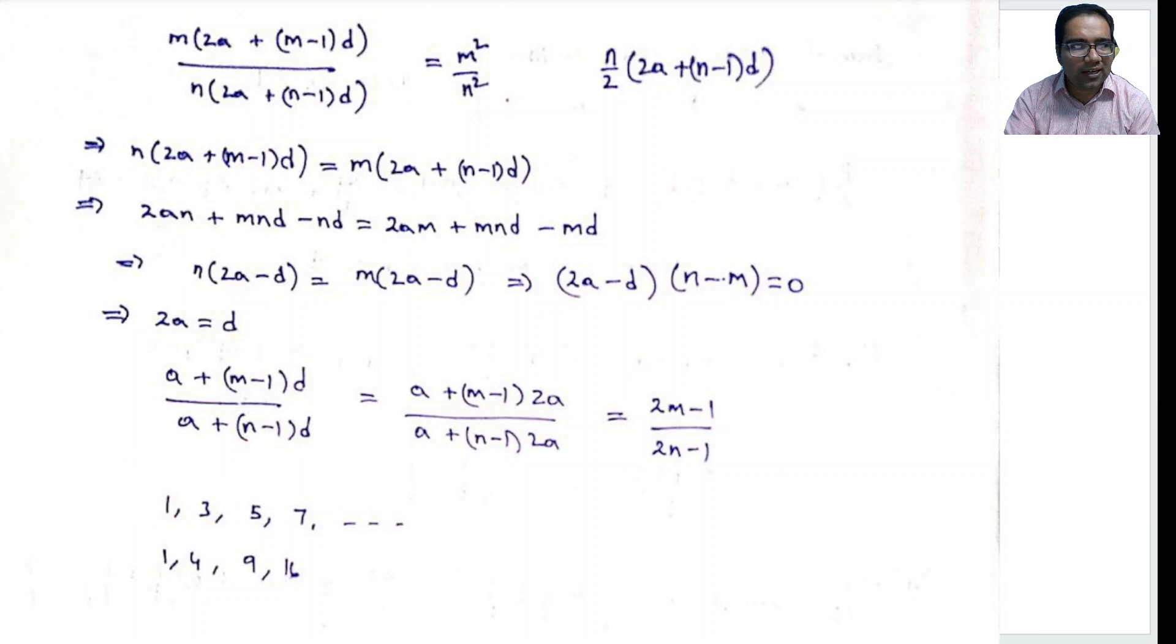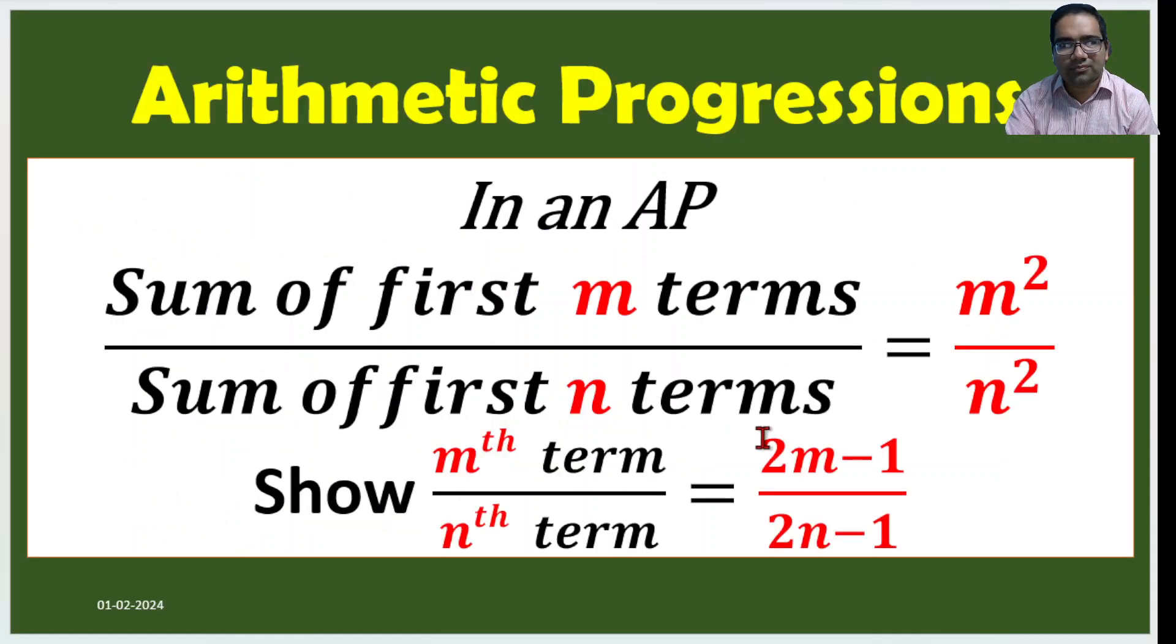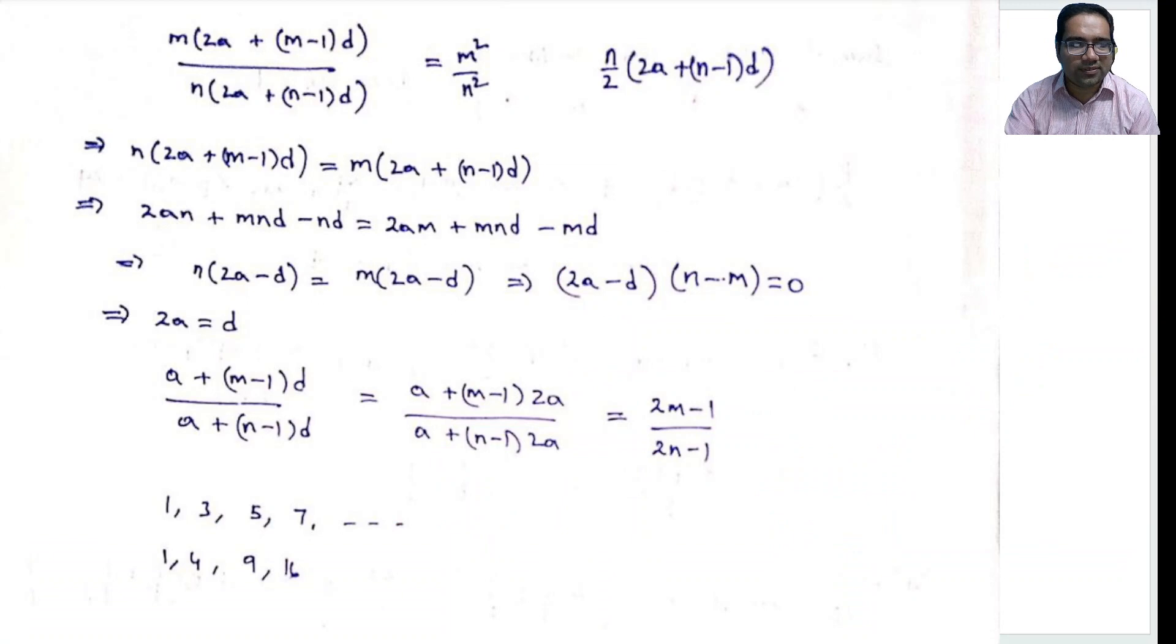And in fact, the question itself is this. We are asked to prove that m-th term by n-th term is kind of odd numbers. 2m minus 1 is always odd, 2n minus 1 is always odd. Let us see how we can mathematically prove this.